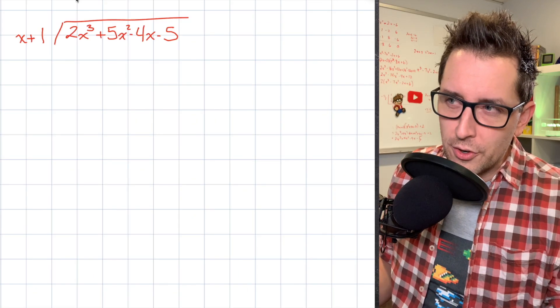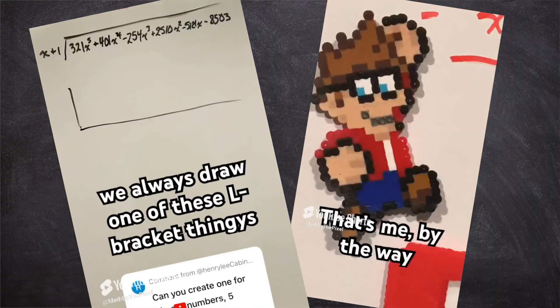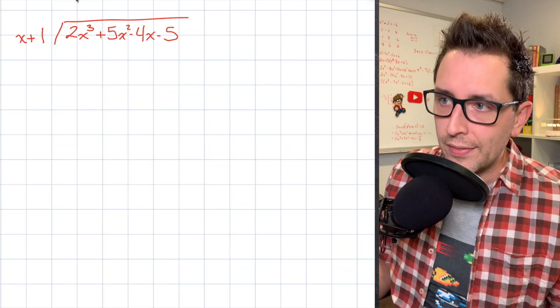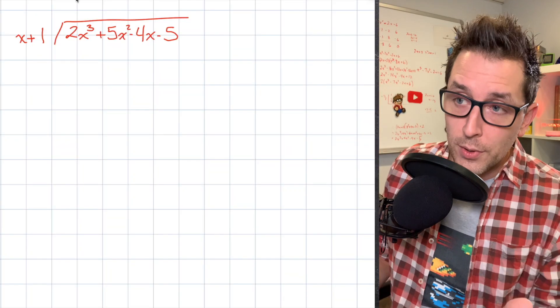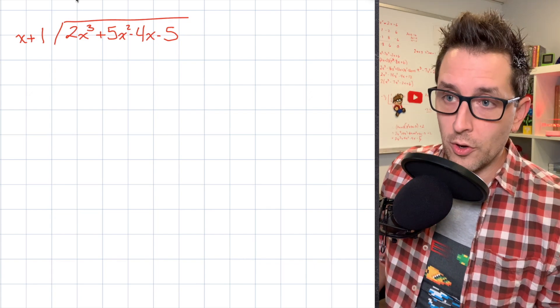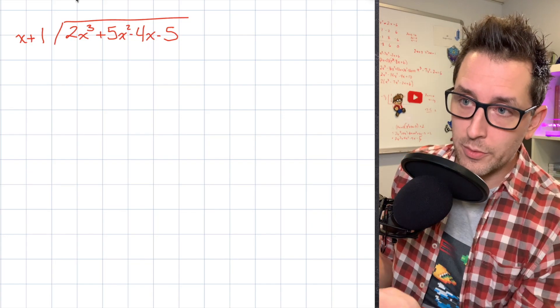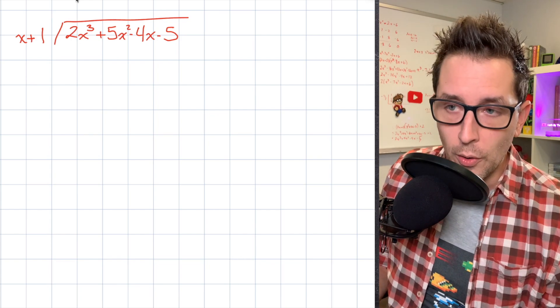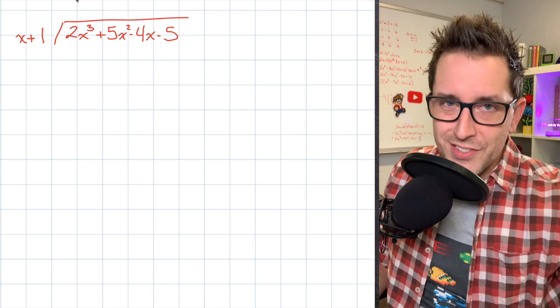Alright, if you're watching this video, you probably have some understanding of what synthetic division is and how it works, and maybe you're just curious about a case where you get a remainder that isn't equal to zero. And that's what I'm going to go through with you right here. So spoiler alert, when you divide this polynomial by this binomial, you will get a remainder that is not equal to zero. So if that's what you're here for, let's get started.